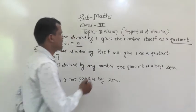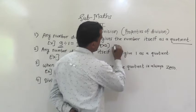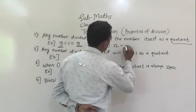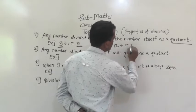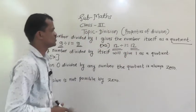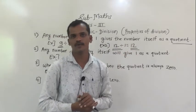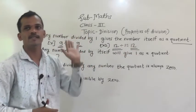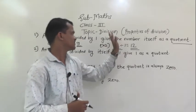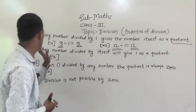Take another example: 12 divided by 1 is 12. Remember this — any number divided by 1, that same number will come as the quotient.